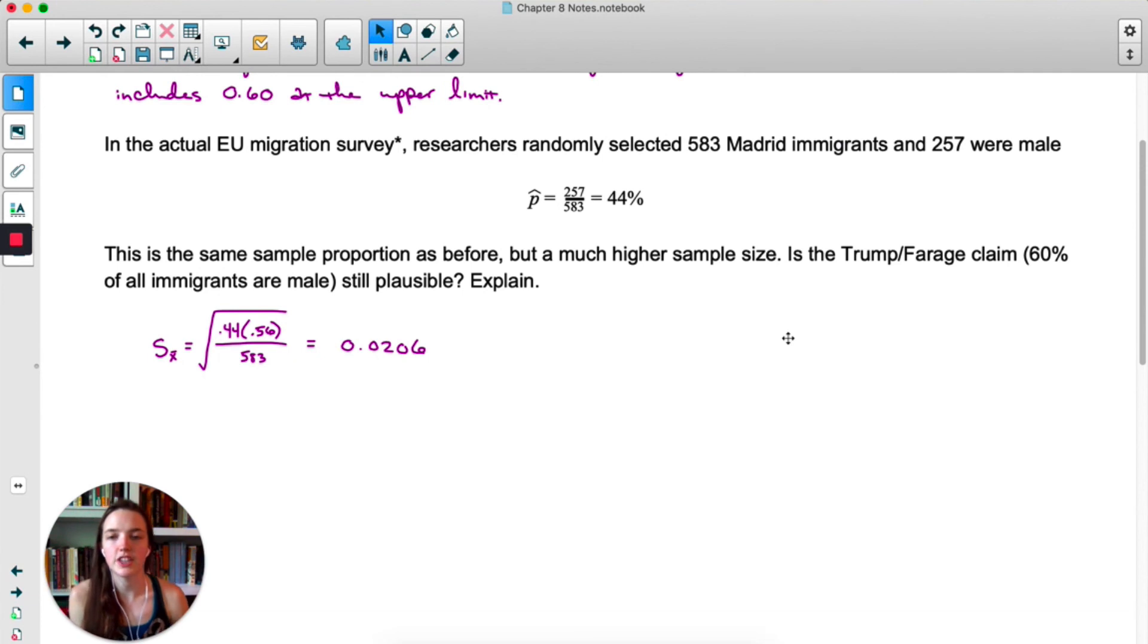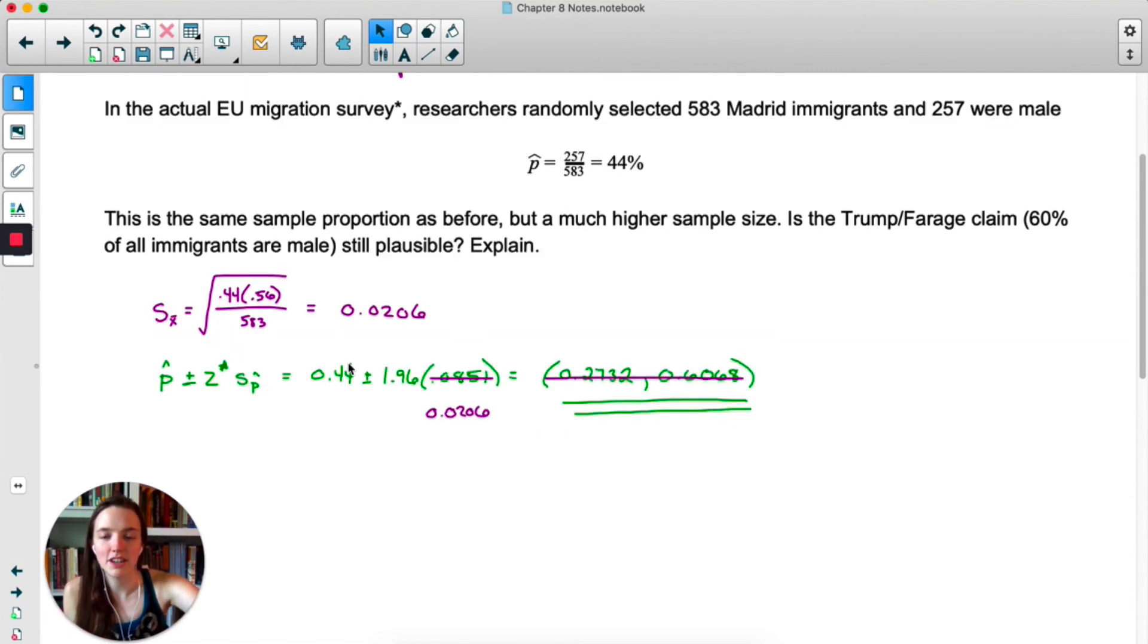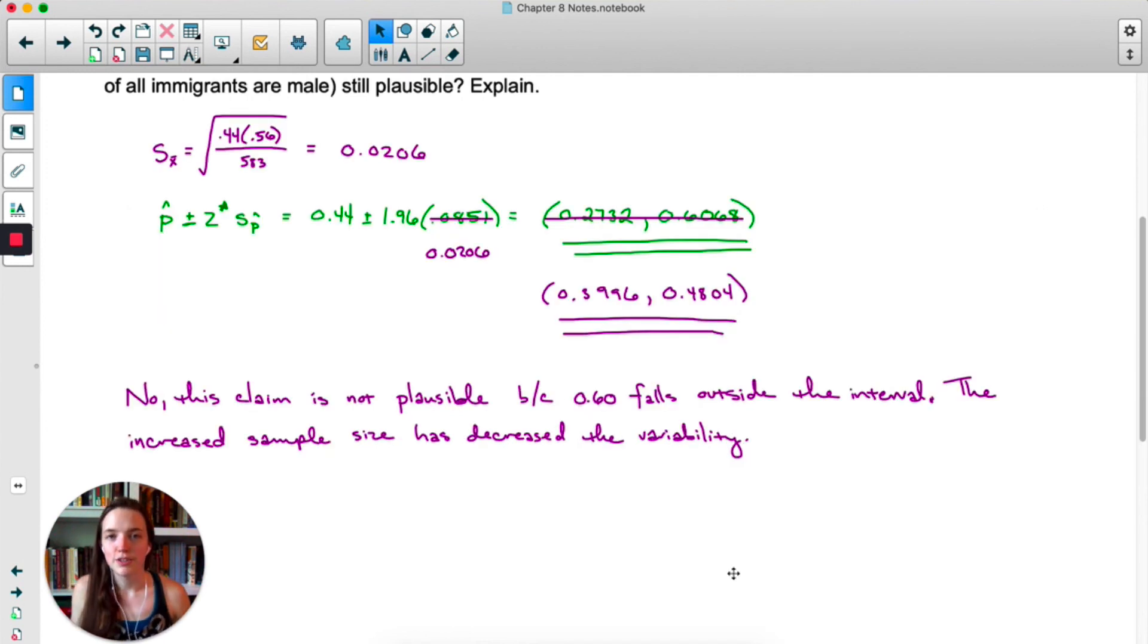So the new standard deviation is 0.0206. This time, we've divided by 583 instead of 34. So clearly, a much smaller standard deviation. Or standard error, I should say. So then we take our original calculation, and all we're doing is, instead of 0.0851, we're putting in 0.0206. Our new interval, we are 95% confident that the true proportion of migrants who are male in Spain is between 0.3996 and 0.4804. So this time, that claim that 60% of migrants are male is not plausible.